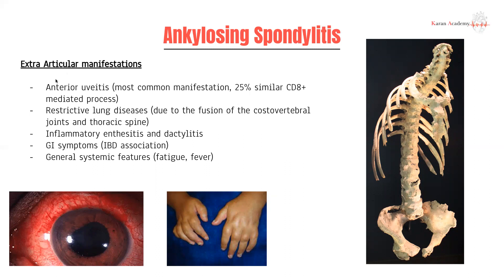Some extra-articular manifestations: firstly, anterior uveitis, which is the most common manifestation of ankylosing spondylitis. Restrictive lung disease, purely because of the effects on the thoracic spine and rib cage — you can also have fusion of the costovertebral joints. Inflammatory enthesitis and dactylitis, so inflammation of the tendon insertions and the fingers. GI symptoms and IBD association, and generally feeling unwell — so fatigue, fever, and weight loss are the common non-specific symptoms.